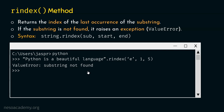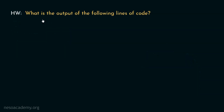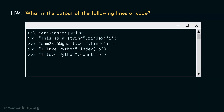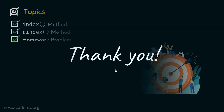We are done with these two topics — we have understood the index method and the rindex method. Now let's move on to the homework problem of this presentation. You need to determine the output of the following four lines of code. Before running them on your Python interactive shell, I want you to spend some time and try to determine the output on your own first. We are done with all the topics and this presentation. Thank you for watching, and I will see you in the next one.